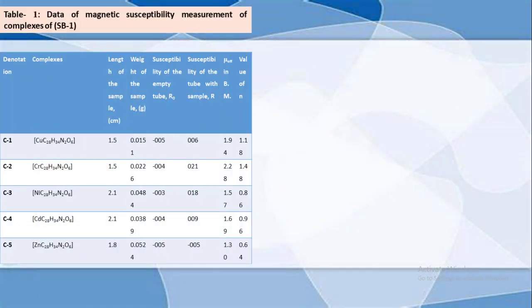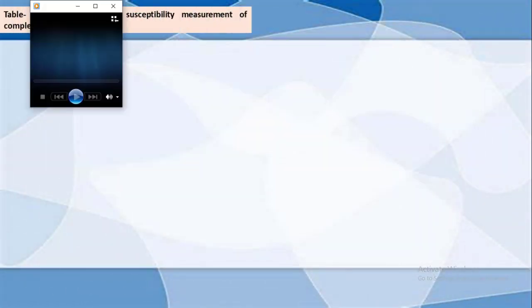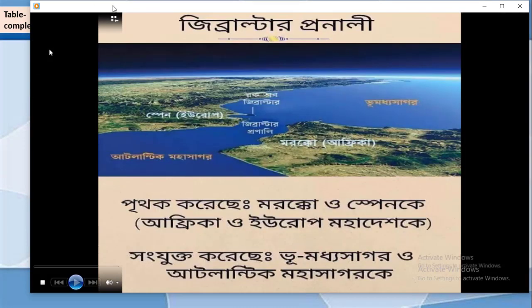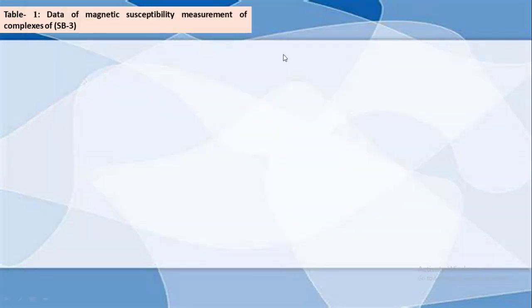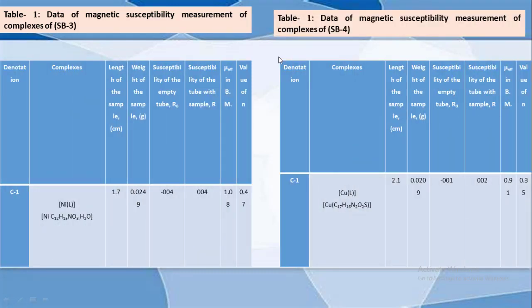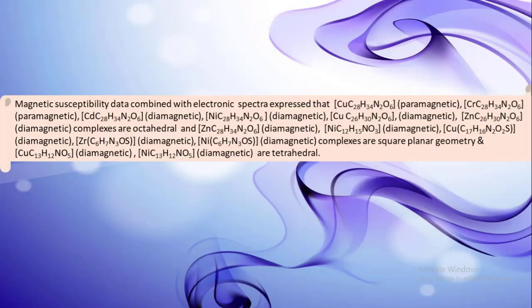Here is data of magnetic susceptibility measurement of complexes for Schiff base ligands one through six. Magnetic susceptibility data combined with electronic spectra express that these complexes have square planar geometry and these are tetrahedral.